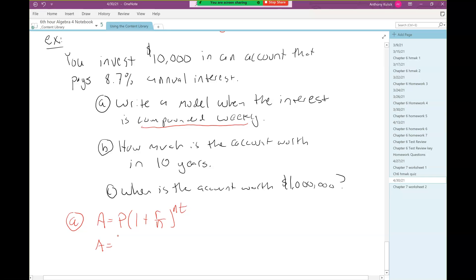In our situation, what two things are changing? The value of the account is changing over time. So a and t are going to be left in our model. We need to fill in a value for p, the initial investment: $10,000. R is the interest rate written as a decimal, that's 0.087.